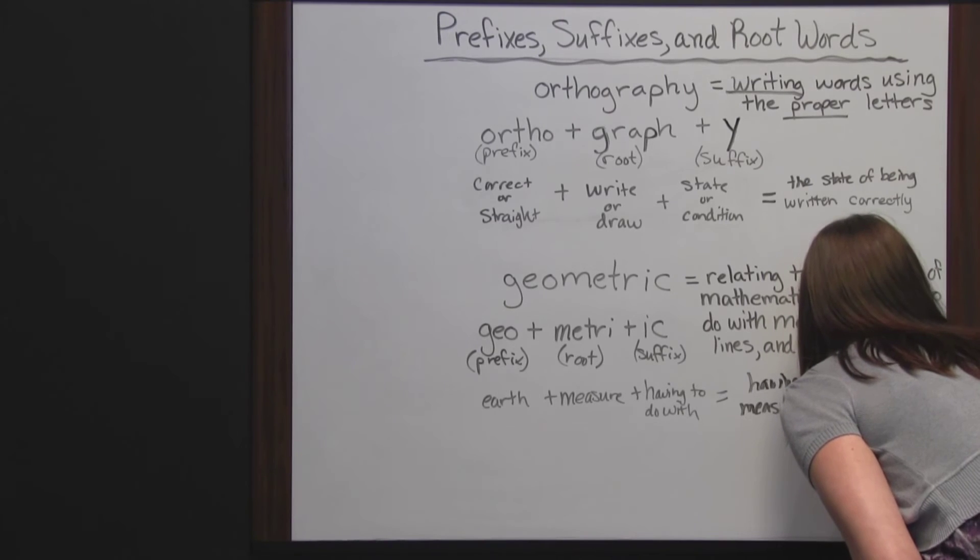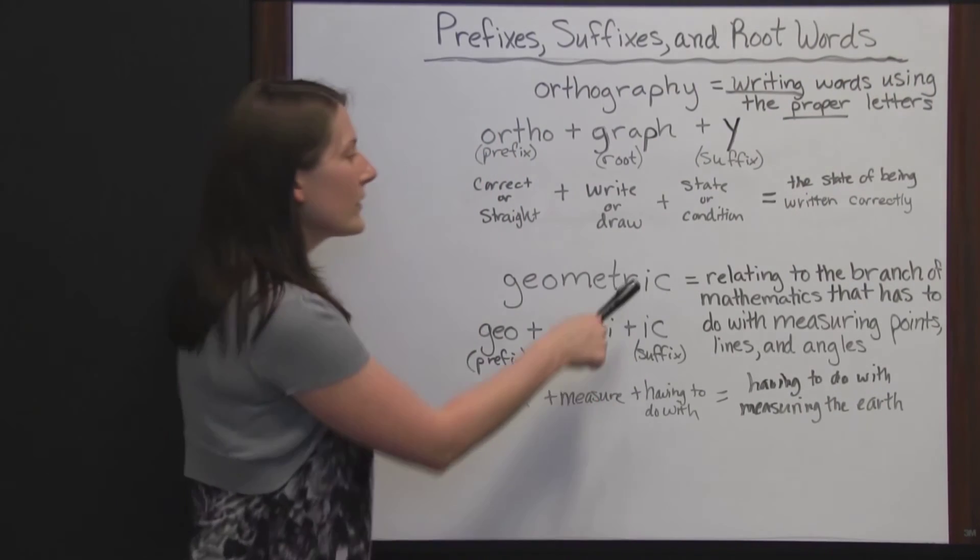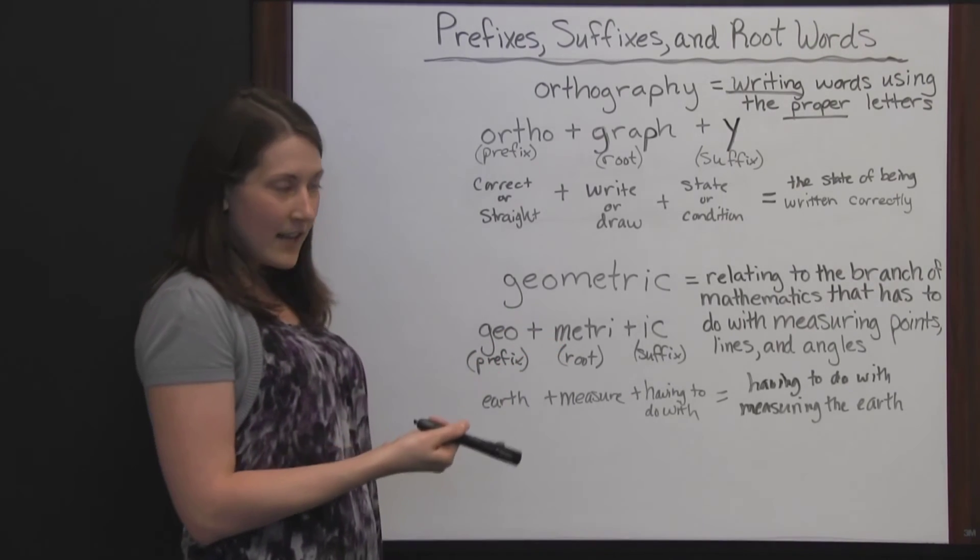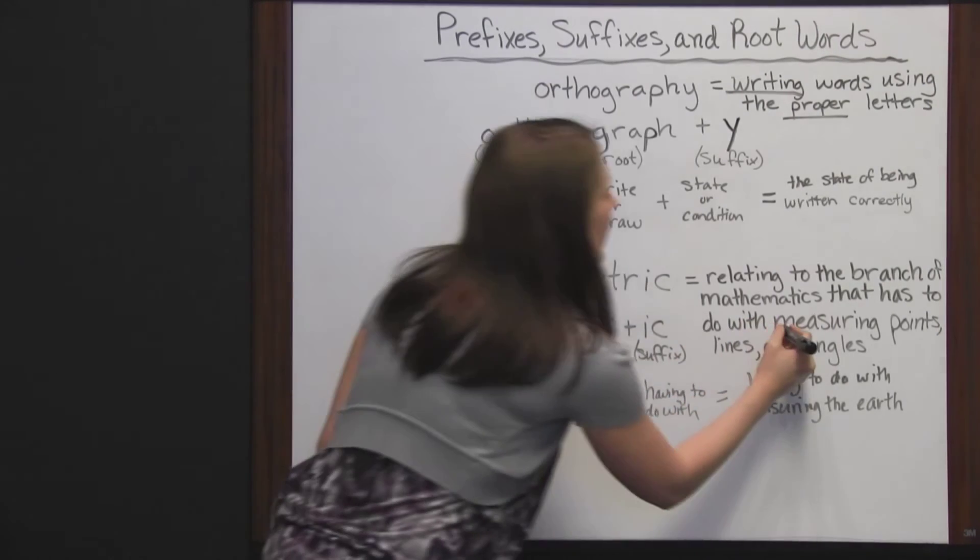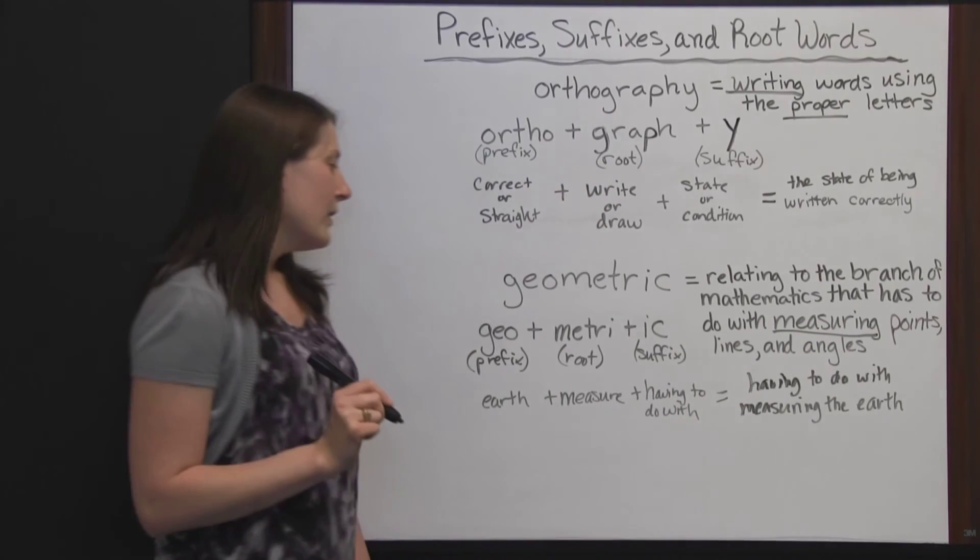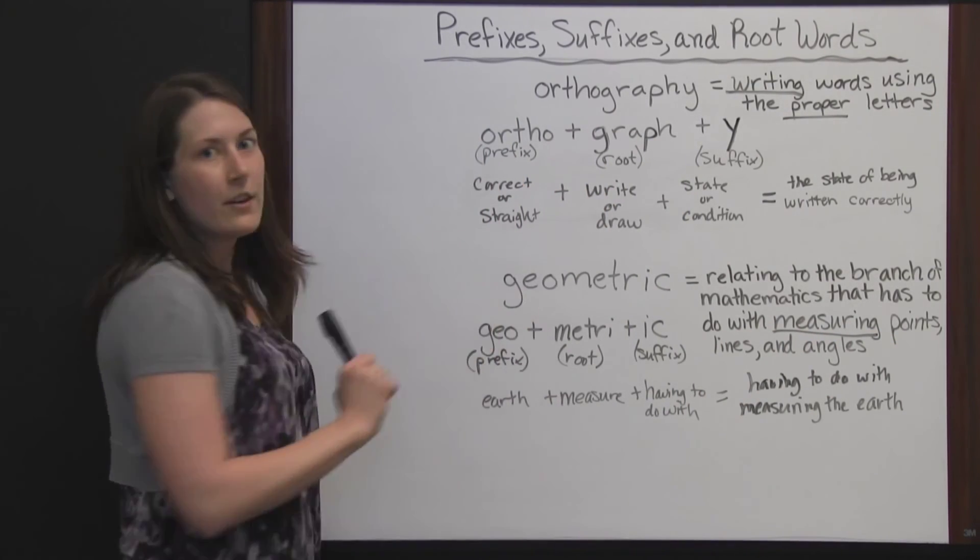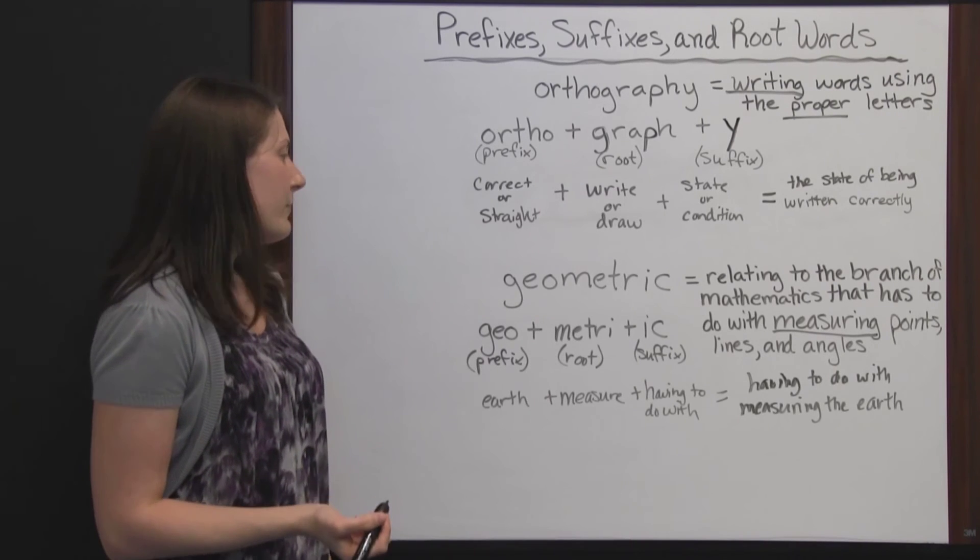Now, this one isn't quite as close to the actual definition relating to the branch of mathematics that has to do with measuring points, lines, and angles, but it does have measuring in there. You would be able to tell from the root word, measure, that geometric is going to have something to do with measuring.